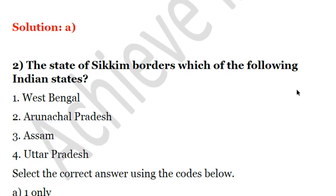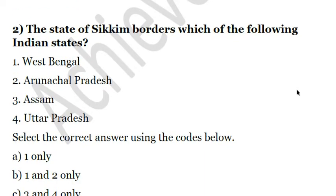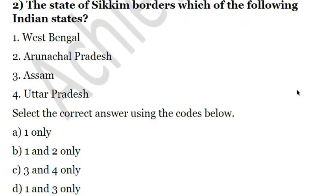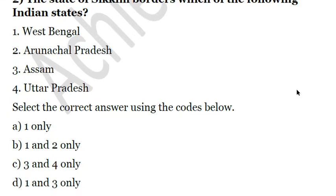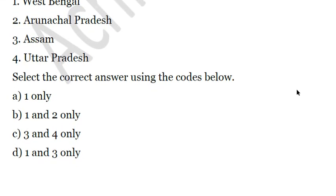Second question: the state of Sikkim borders which of the following Indian states? One, West Bengal. Two, Arunachal Pradesh. Three, Assam. Four, Uttar Pradesh. Sikkim borders only West Bengal among Indian states — on all other three sides it is surrounded by Nepal, China, and Bhutan. So only one state borders it, and that is West Bengal. The answer is A.